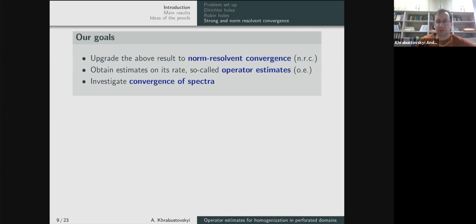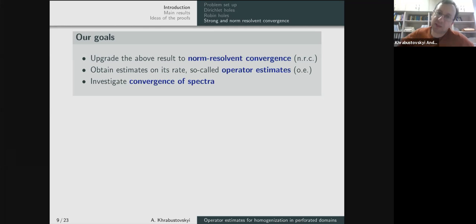Spectral convergence is not automatic — since our spaces are epsilon-dependent, we cannot use the classical result that norm-resolvent convergence implies spectral convergence. These are the goals posed in our papers. Before presenting our results, let me survey what was done before.